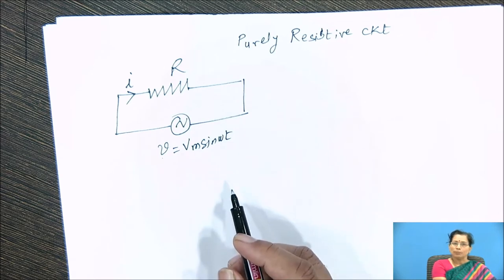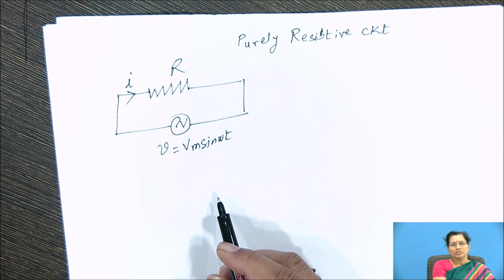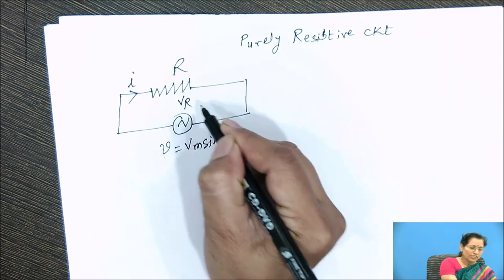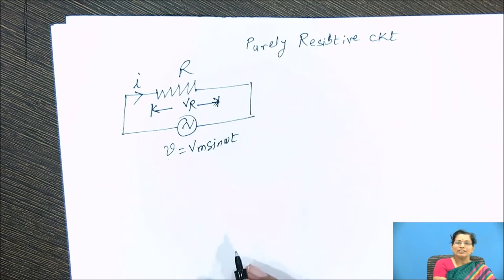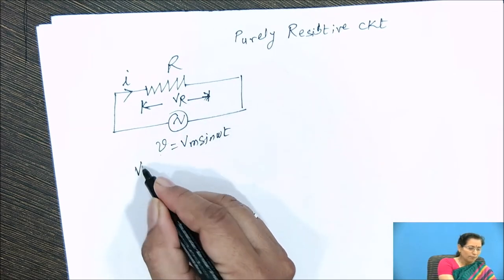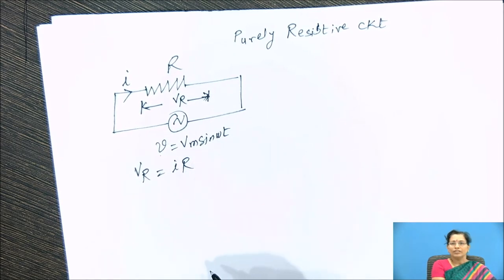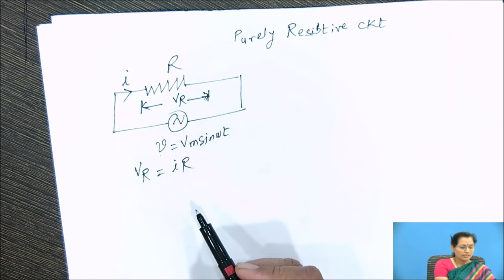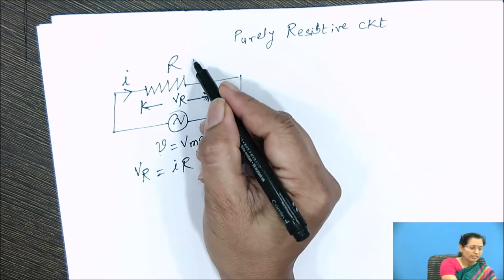Resistance is the property which opposes the flow of electrons. Due to that, a resistive voltage drops across this resistance, that is Vr. This Vr is given by I into R, according to Ohm's law, where I is the current flowing through this resistance and R is the resistance in Ohms.